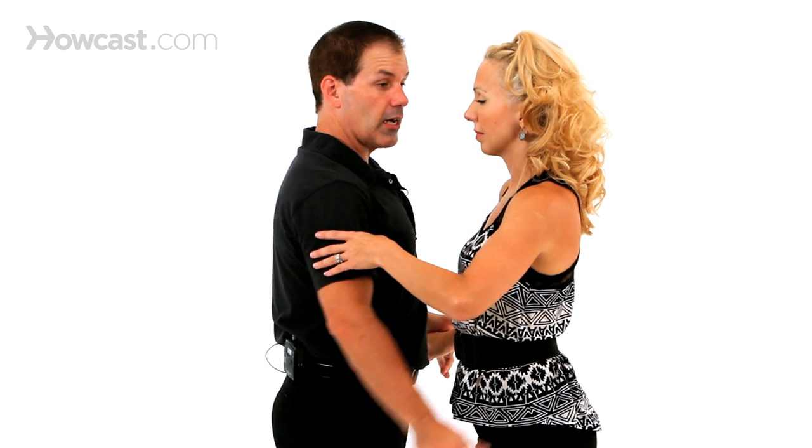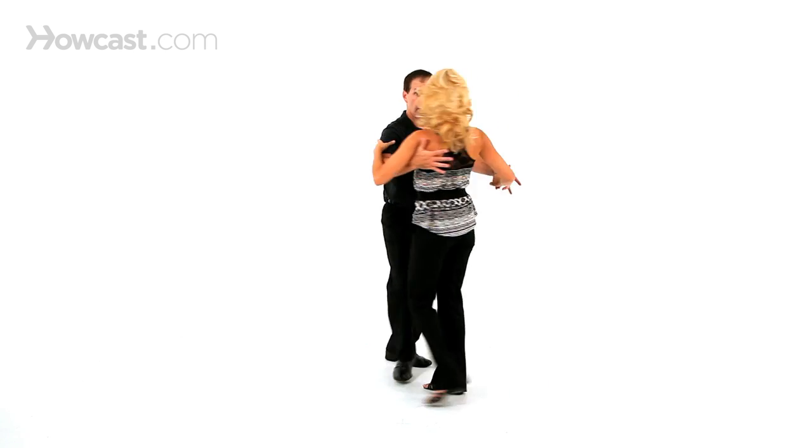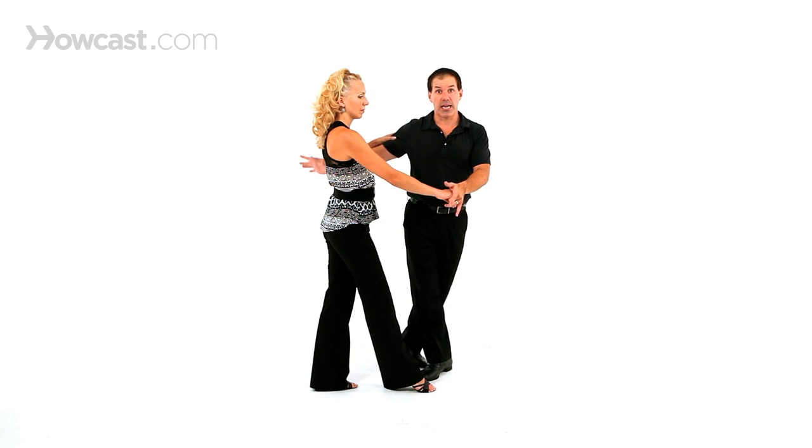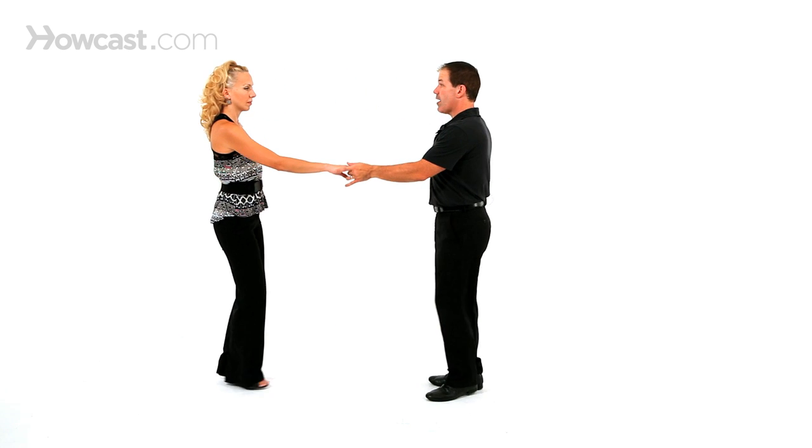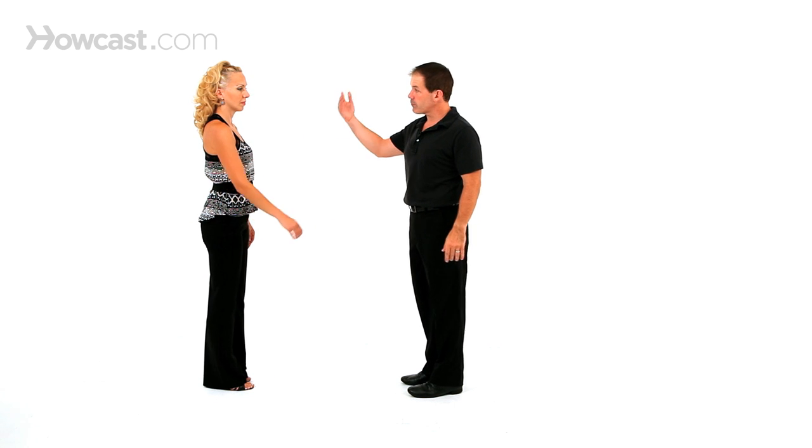On five, I'm going to collect my foot underneath me as she turns. Five, that's the whipping effect, letting go. Six, seven and eight. So I'm going to pick her up on two and let her fly on five. Pick her up on two, let her go on five.